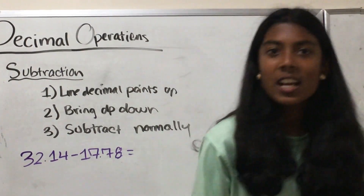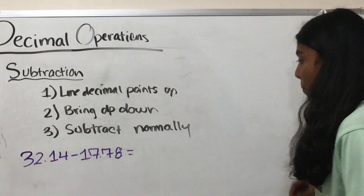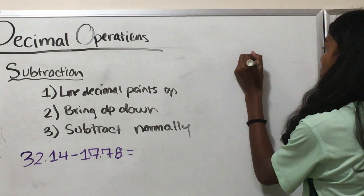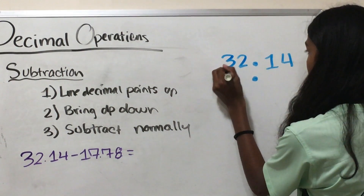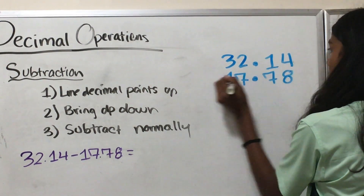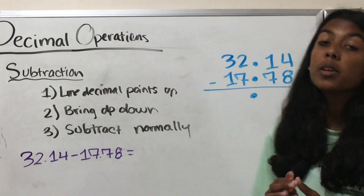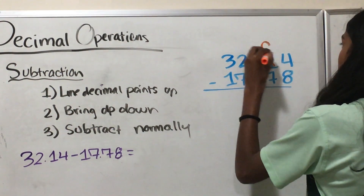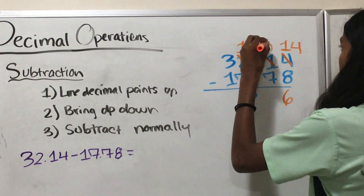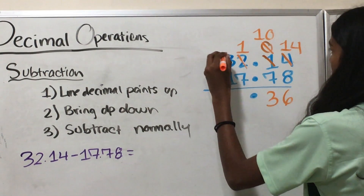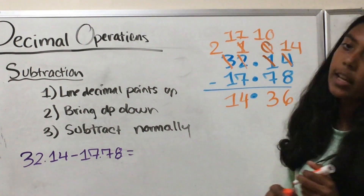Now we're going to move on to decimal subtraction. It's the same thing as decimal addition, but instead of adding at the end, you're subtracting. Let's do 32.14 minus 17.78. Line up the decimal points, bring the decimal point down, then subtract: 4 minus 8 is not possible, so we borrow — make that 1 a 0, make this 4 a 14; 14 minus 8 is 6. 0 minus 7 is impossible, so borrow — make that 2 a 1, that 0 becomes 10; 10 minus 7 is 3. 1 minus 7 is impossible, so borrow — make that 3 a 2, make that 1 an 11; 11 minus 7 is 4. And 2 minus 1 is 1. So our answer is 14.36.